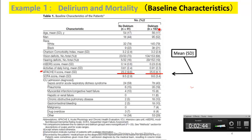Among the 183 delirium patients, the mean Apache was 25.6. Among no-delirium patients, the mean Apache was 23.2. By looking at this, we know patients with delirium are slightly sicker than patients without delirium.